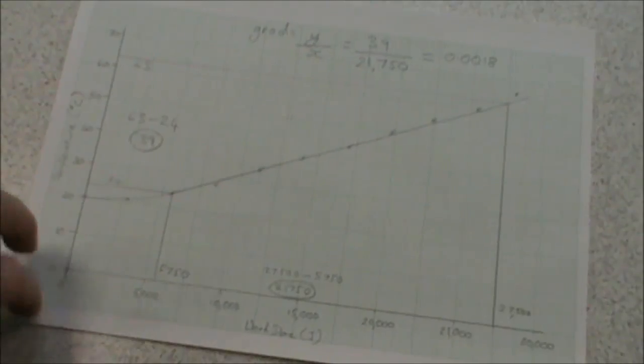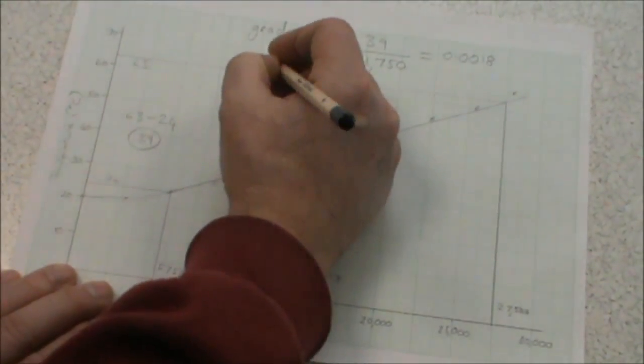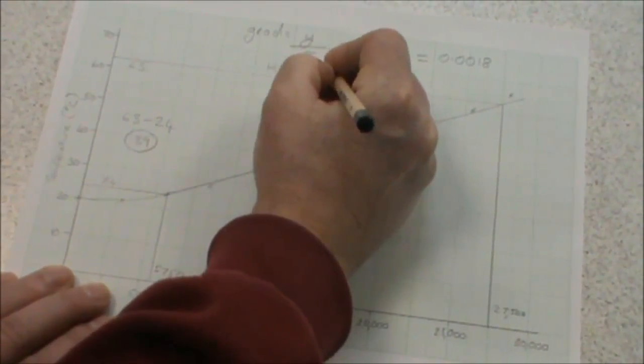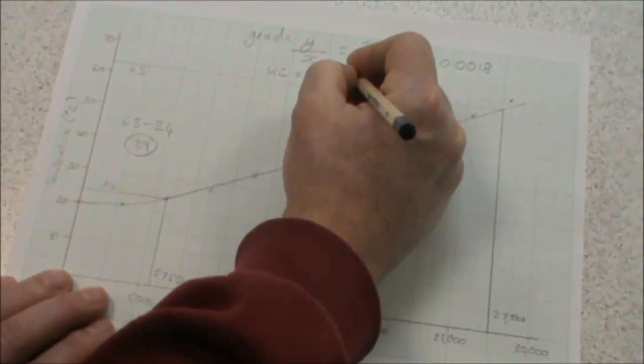That is the gradient of the graph. To calculate the heat capacity, we do 1 over the gradient. So on your calculator, you can just press the reciprocal button, which is x to the minus 1, or 1 over x. Or you can type it in again. We do 1 divided by 0.0018. Which gives us a heat capacity of 555.5 recurring.